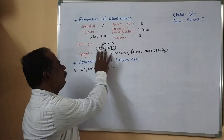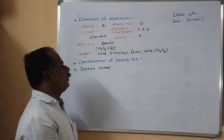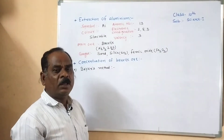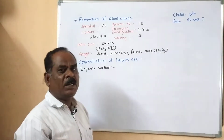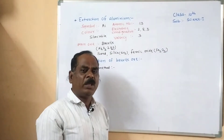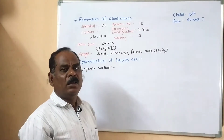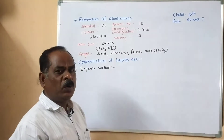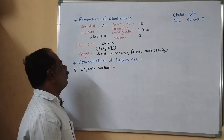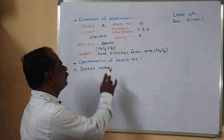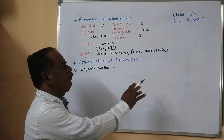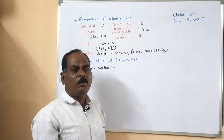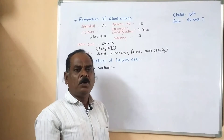Bauxite is the main ore of aluminum. Bauxite contains about 30 to 70 percent of alumina Al₂O₃, with the remainder being impurity or gangue. The main impurities present in bauxite ore are sand, silica, ferric oxide, and a small quantity of titanium oxide.